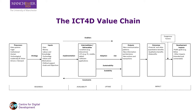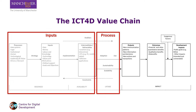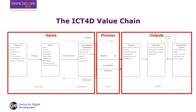Why is this a value chain? Because it takes inputs and then processes them into outputs. And those three parts — input, process, output — make up a chain, and assuming it adds value for someone, then it's a value chain.